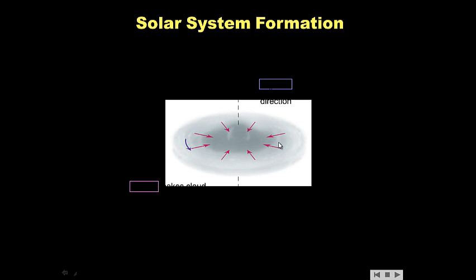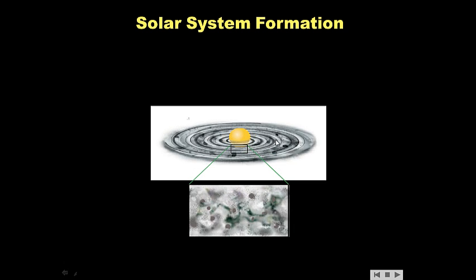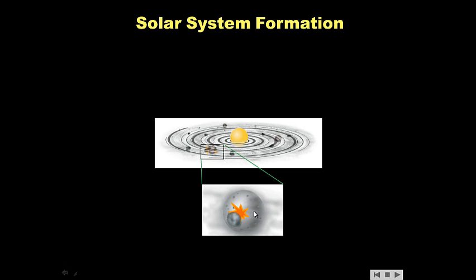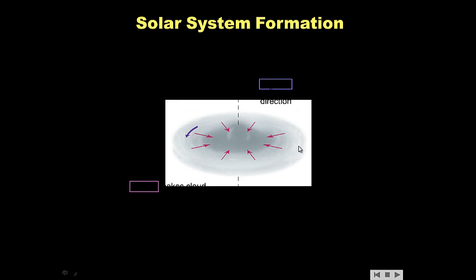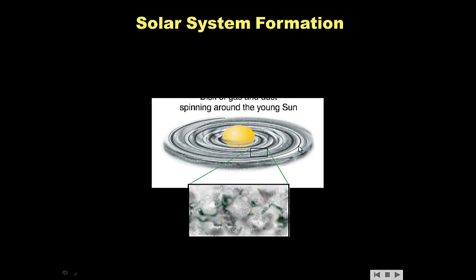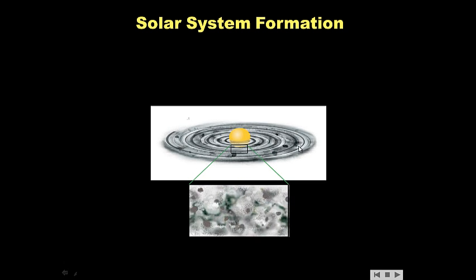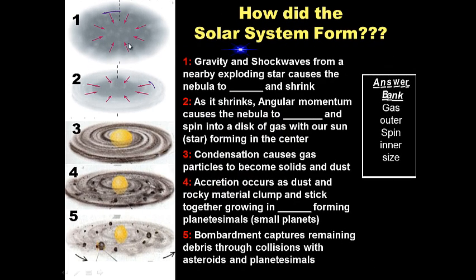Let's look at this animation to review: condensation, accretion, and bombardment. These small planets are being bombarded by the remaining rocky material — and that is how our solar system formed.